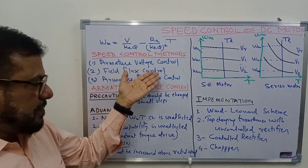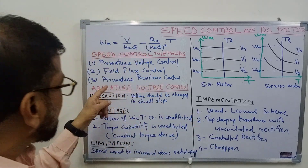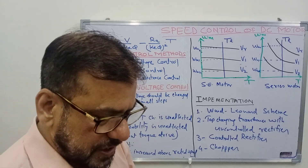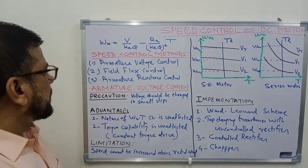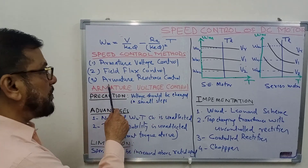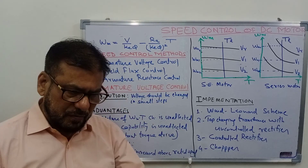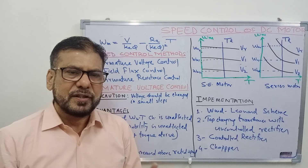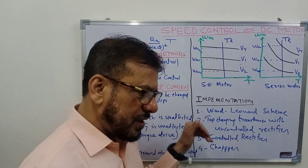The first is armature voltage control, where we change the voltage applied across the armature. The second method is field control or field flux control, where we vary the flux produced by the field winding by varying the current through it. The third method is to vary the resistance of the armature circuit by inserting external resistance in series with the armature.